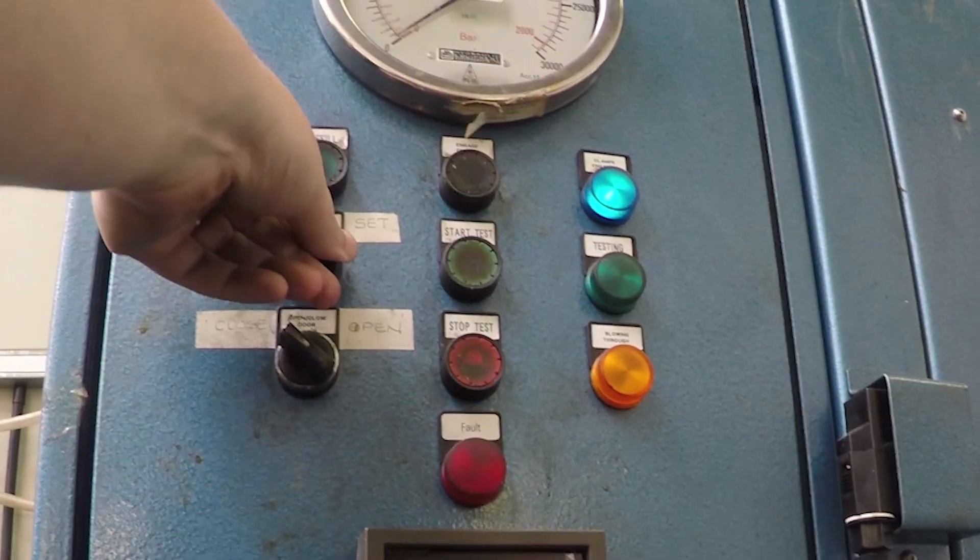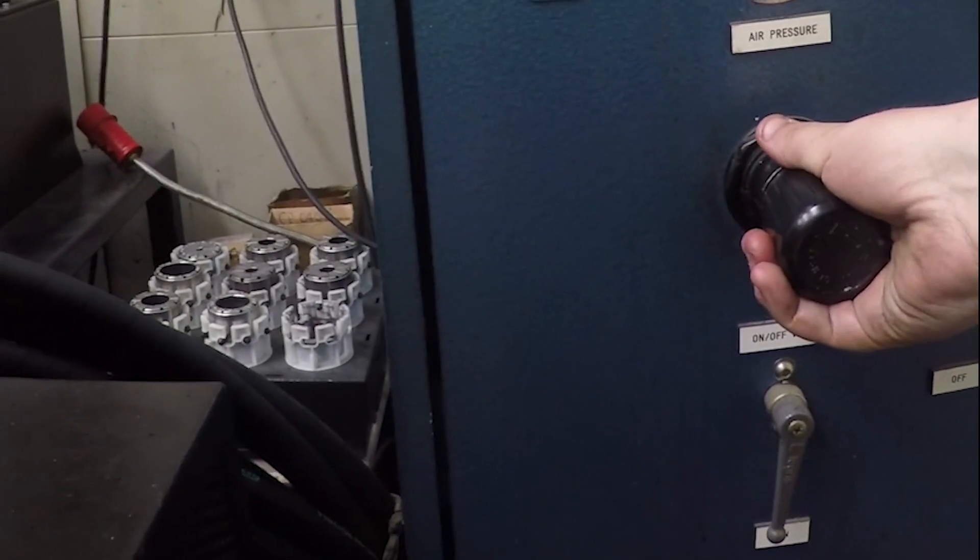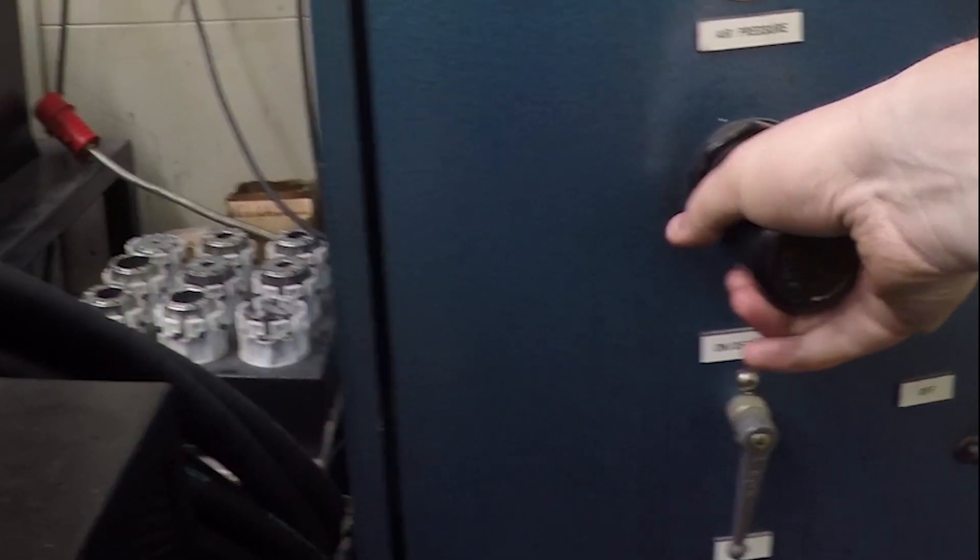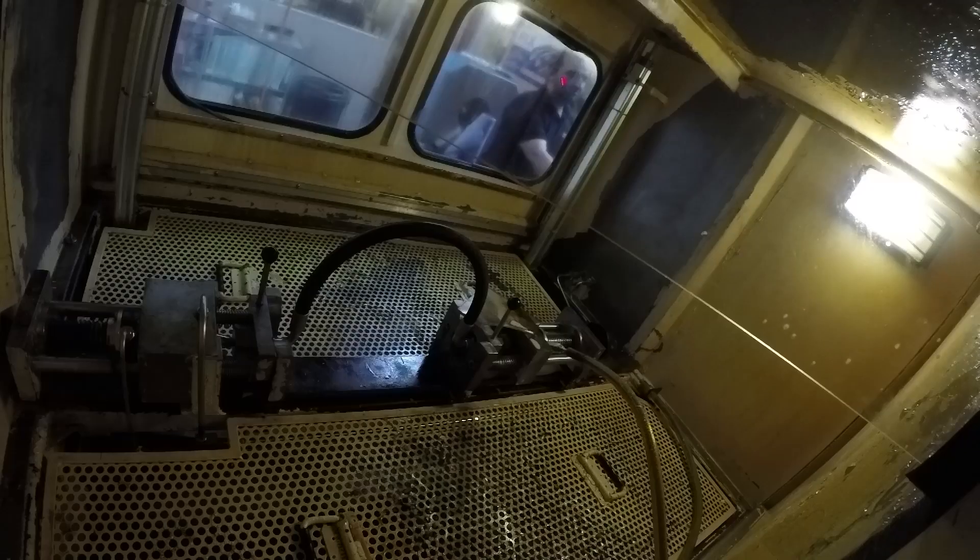Flip the switch on the machine to set and pull the dial out until it clicks. Slowly turn the dial in a clockwise direction. This will increase the pressure being put into the hose.